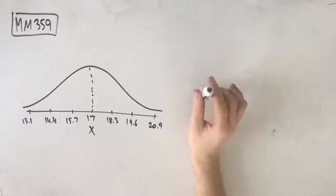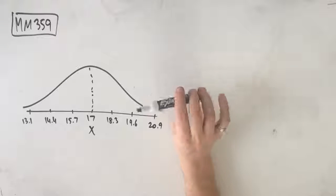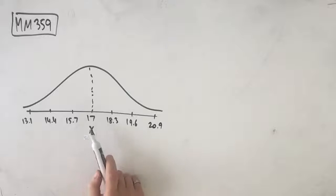Hey guys, welcome to question MM359 of the Maths Methods Fortifier Study Guide. So in this question we've got the random variable x which has a normal distribution with mean 17 and a standard deviation of 1.3.